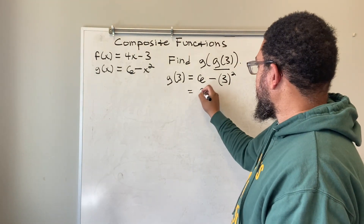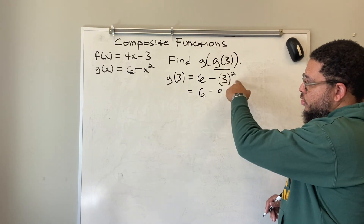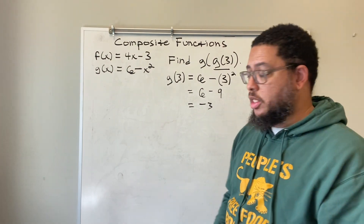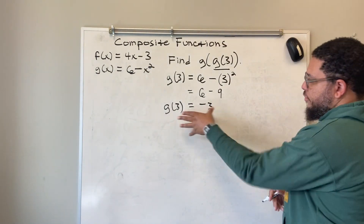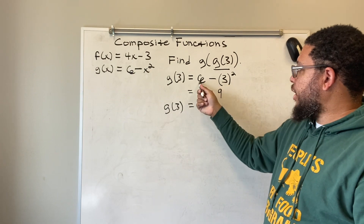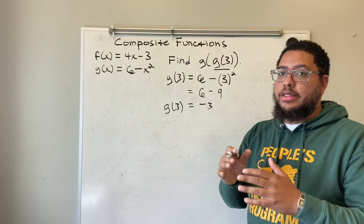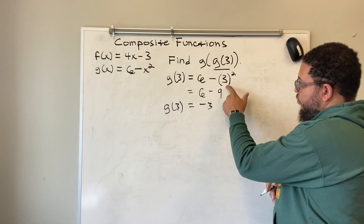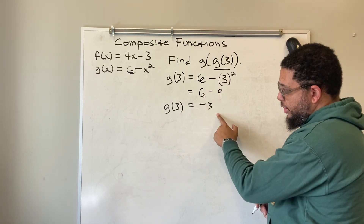Now using order of operations: 6 minus 9. Notice that minus sign is outside the parentheses, so it's not negative 3 squared — it's just 3 squared, which is 9. Then you do 6 minus 9, which is negative 3. So g of 3 equals negative 3. If you're not solid on order of operations, go back and review — I have videos on this channel covering that. So g of 3 equals negative 3.